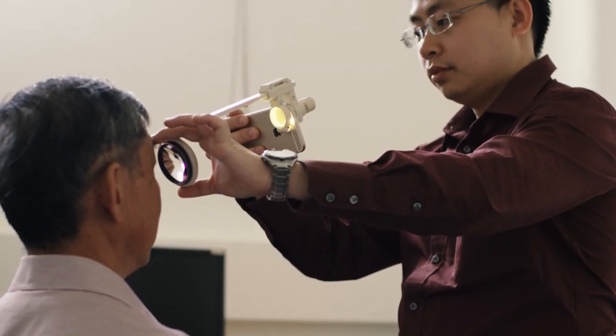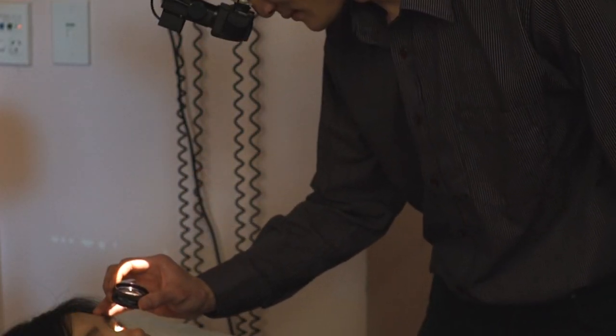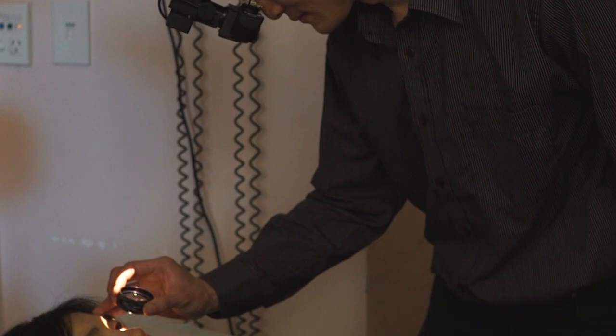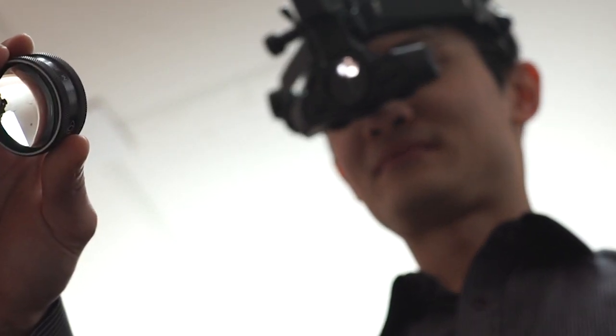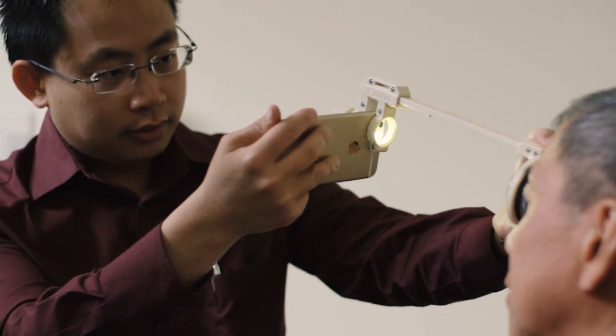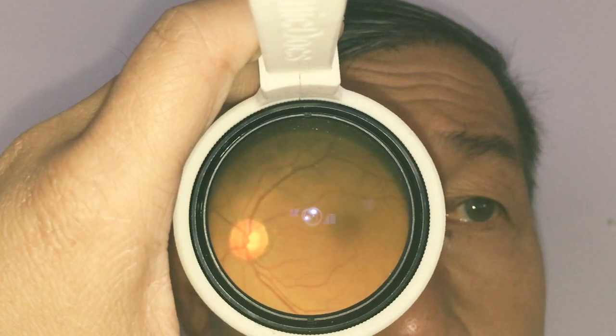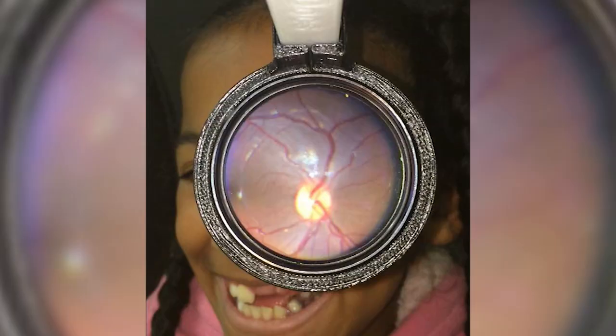The OdysSight fundus is based on the same optical principle of indirect ophthalmoscopy. By using a handheld lens secured on the device, we're able to get a 40 to 50 degree field view of the back of the eye. It is especially useful in patients who are immobile or in pediatric cases.